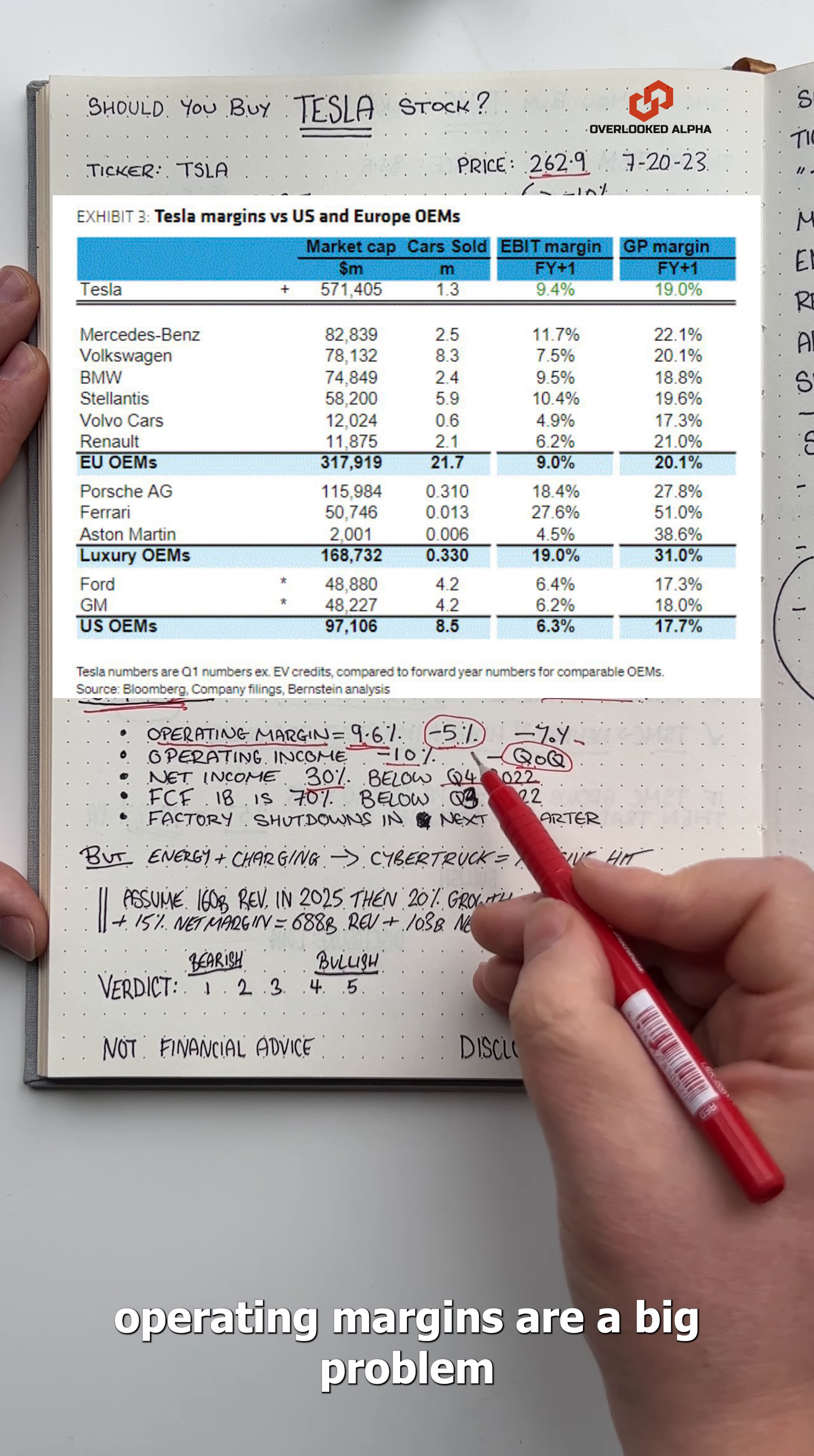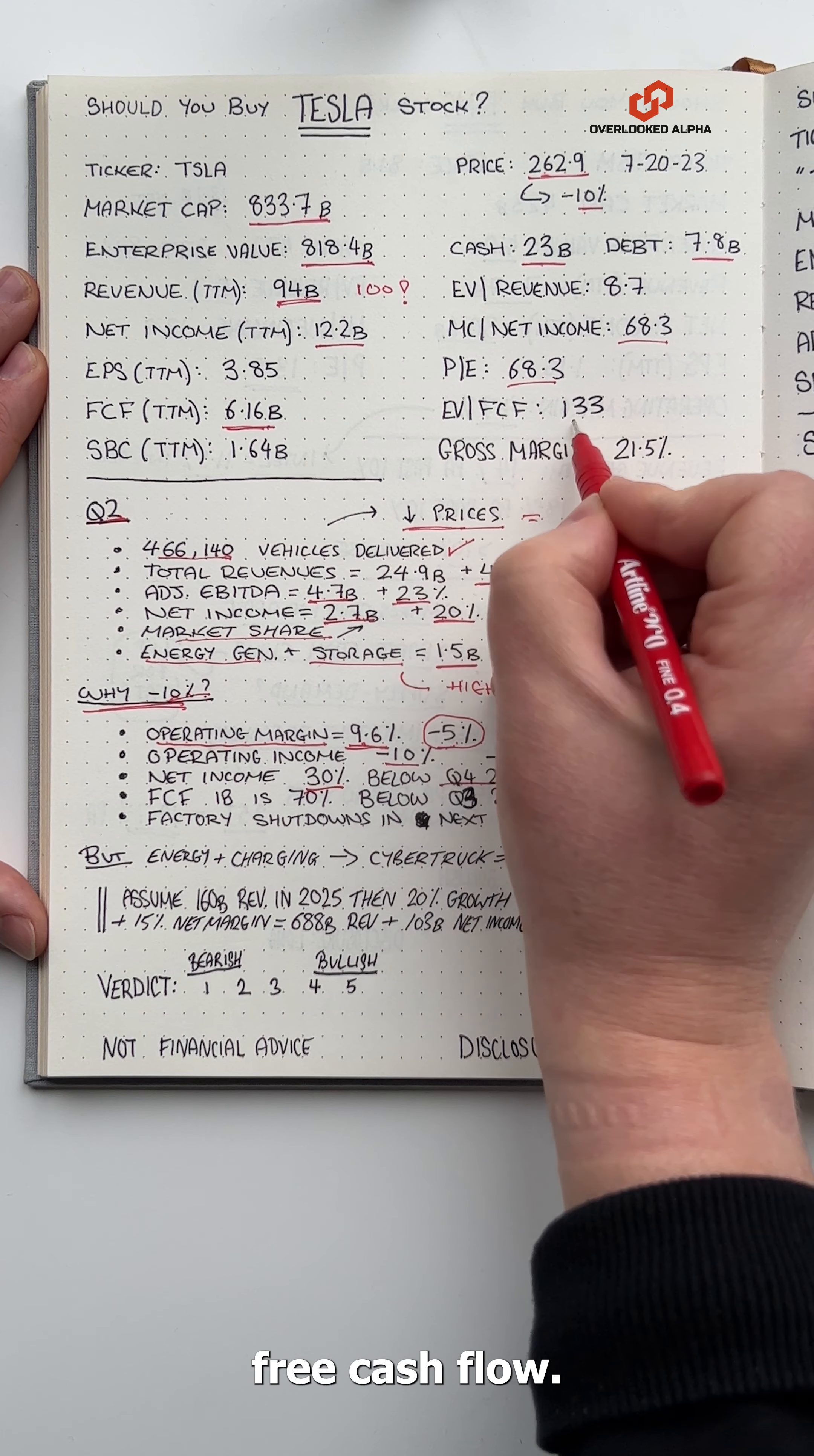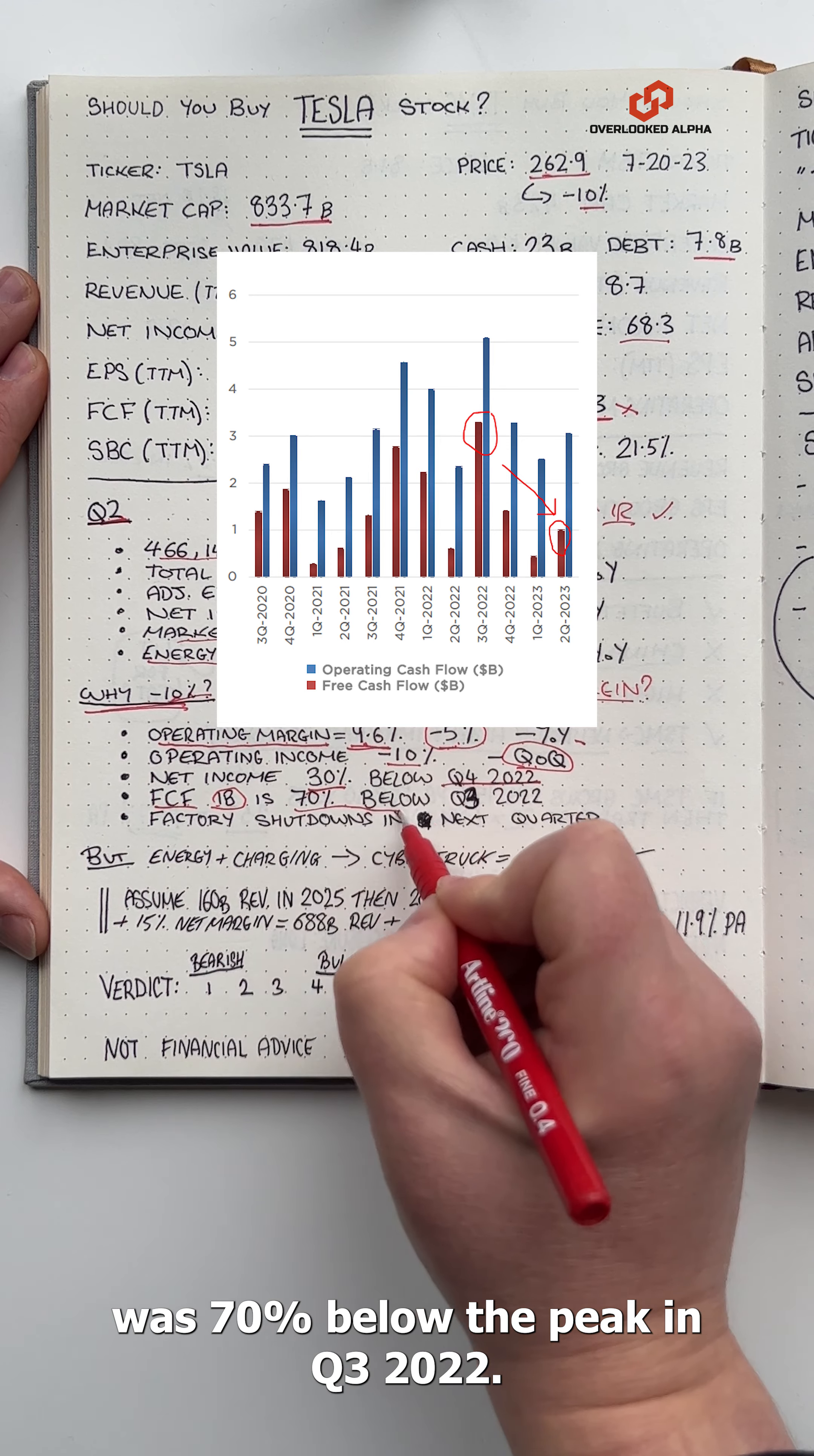Lower operating margins are a big problem when the stock trades at such a high multiple of 68 times earnings and 133 times free cash flow. In fact, free cash flow at $1 billion was 70% below the peak in Q3 2022.